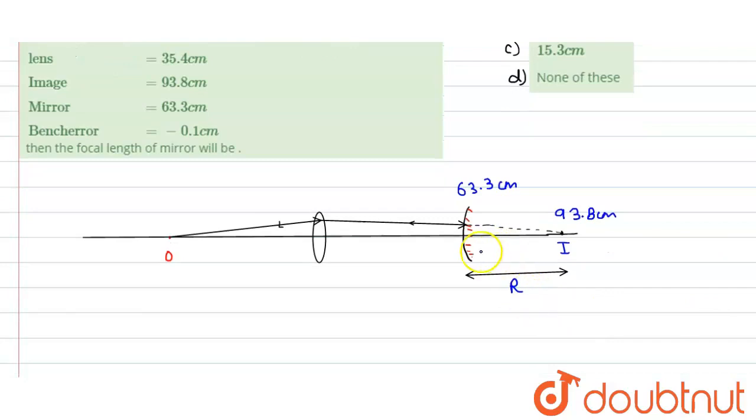What would be our radius of curvature? We can simply say that R would be equals to 93.8, because these are the positions, these are not the distances, minus 63.3. If we solve this, it would turn out to be 30.5 centimeter.